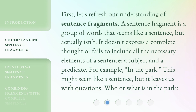First, let's refresh our understanding of sentence fragments. A sentence fragment is a group of words that seems like a sentence, but actually isn't. It doesn't express a complete thought or fails to include all the necessary elements of a sentence — a subject and a predicate. For example, 'in the park.' This might seem like a sentence, but it leaves us with questions: who or what is in the park?